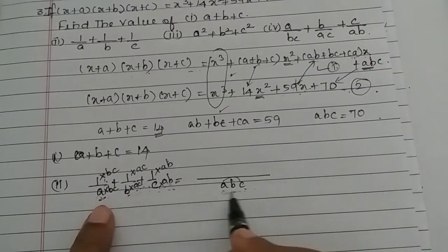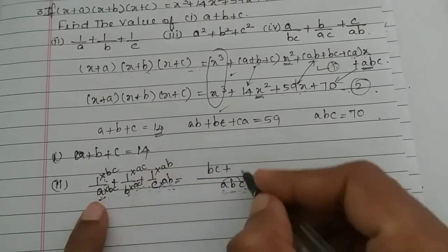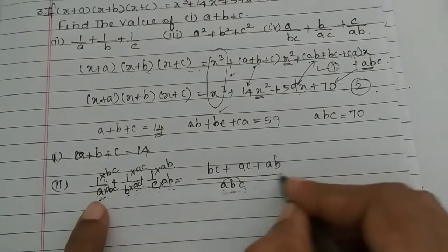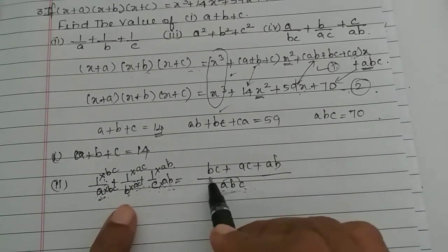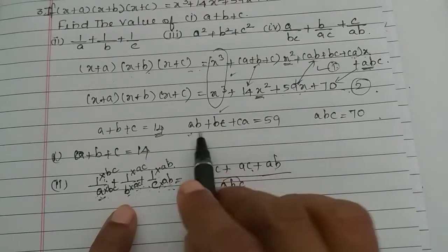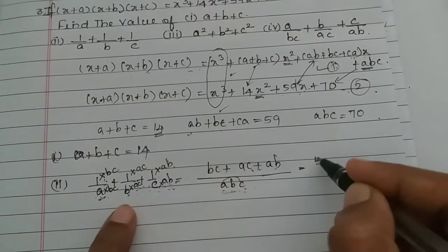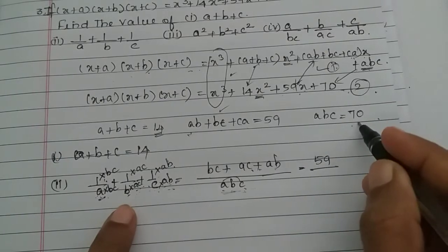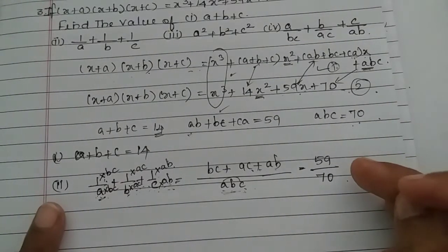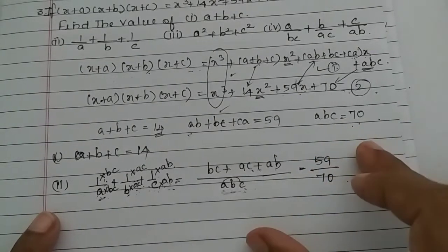The common denominator gives us BC + AC + AB over ABC, which is AB + BC + CA over ABC. So this equals AB + BC + CA, which is 59, over ABC, which is 70. So the second subdivision answer is 59/70.